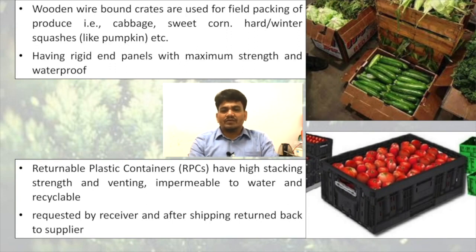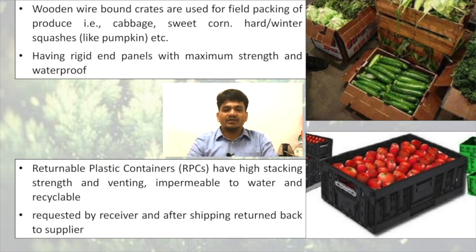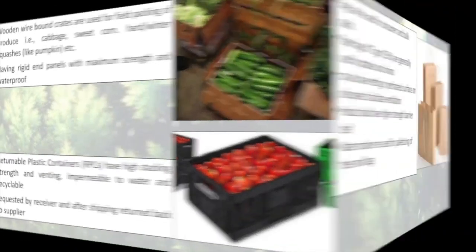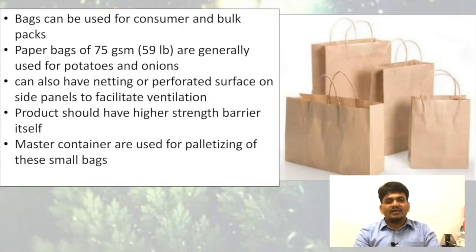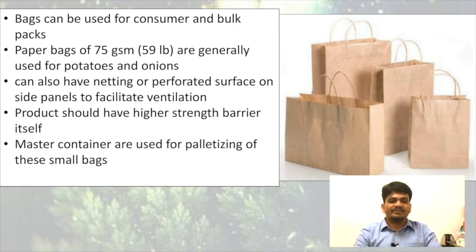Returnable plastic containers have high stacking strength, venting, are impermeable to water, and recyclable. They are requested by the receiver and after shipping are returned back to the supplier — that is why we call them returnable plastic containers. Another type is bags: paper bags of 75 GSM are generally used for potatoes and onions and can also have a knitted or perforated surface on side panels to facilitate ventilation. Products should have higher-strength barrier, and master containers are used for palletizing these small bags.